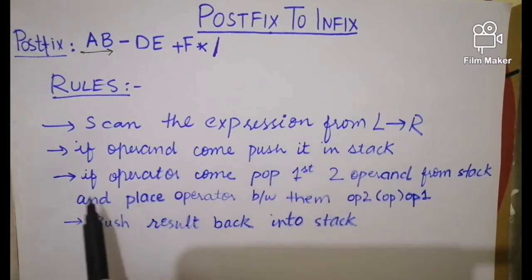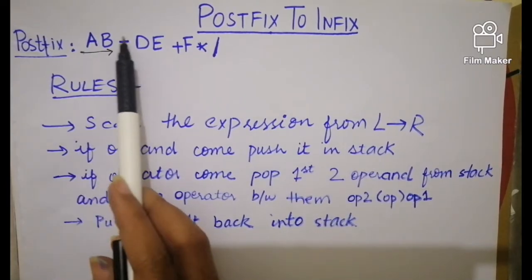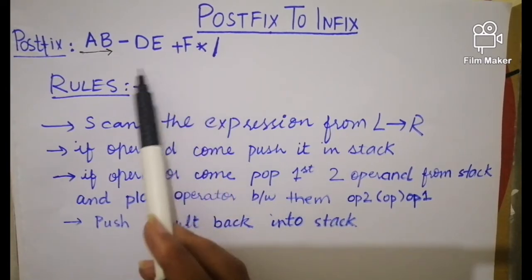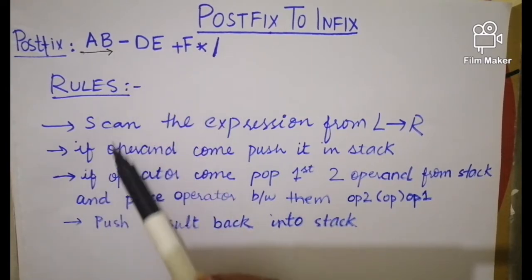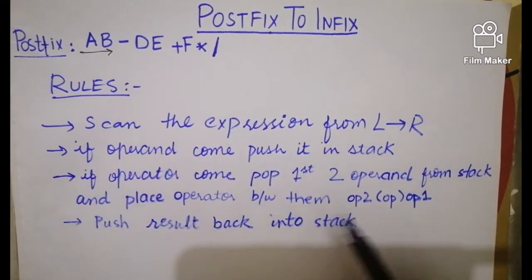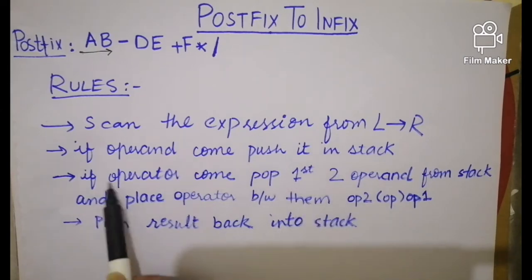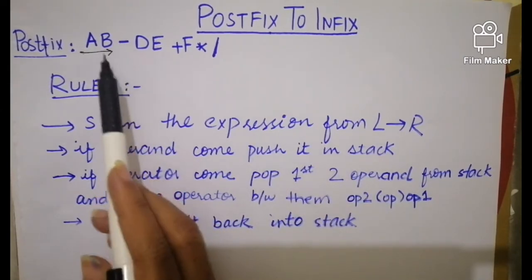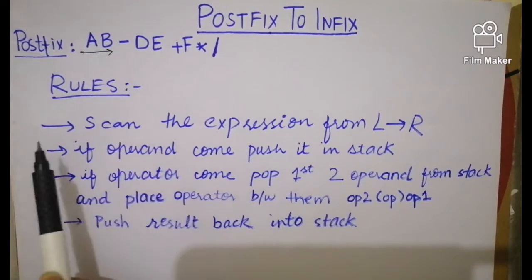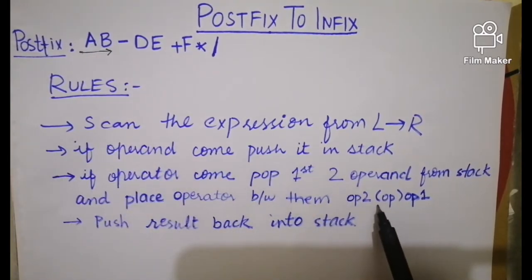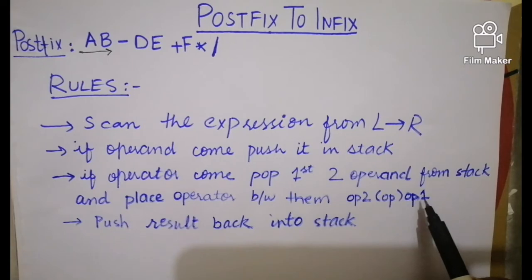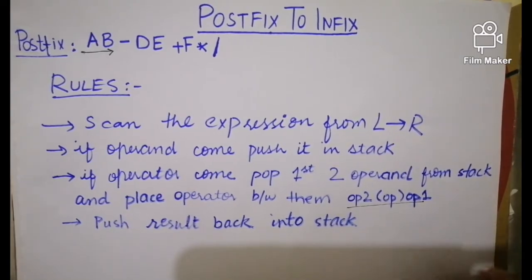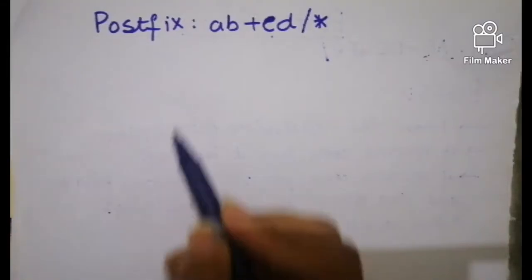Next, if an operator comes — like minus, plus, multiplication, or division — then pop the first two operands from the stack and place the operator in between the two operands in this way: operand two, operator, then operand one. Then push the result back into the stack.